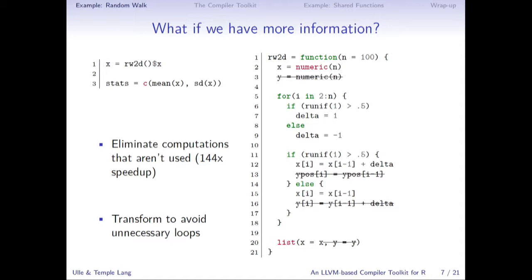We can go a step further and avoid unnecessary loops as well. We have a loop for our random walk, but there's also an implicit loop in computing the mean and standard deviation, which must loop over the elements of X. If we can eliminate those redundant loops — because we really only need one loop over all the elements of X — by combining them all into one loop, we can get further performance improvements. We don't have that done automatically yet, but the point is there are many ways to speed up R.